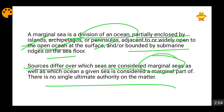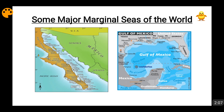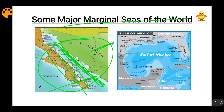We will now discuss some marginal seas of the world. Here you can see the Gulf of California — this is Mexico and this is the USA, and the Gulf of California lies in between. This is a very important gulf, and it is also a marginal sea, enclosed on all sides. Then there is the Gulf of Mexico and the Persian Gulf — these will also become marginal seas. Gulfs, by their nature, tend to become marginal seas.